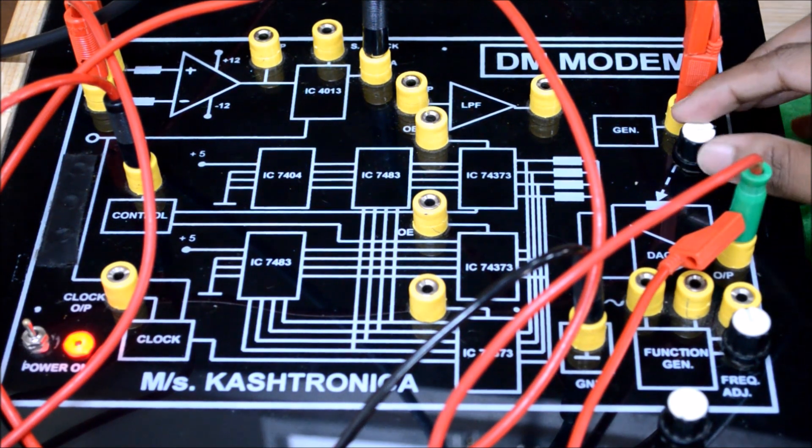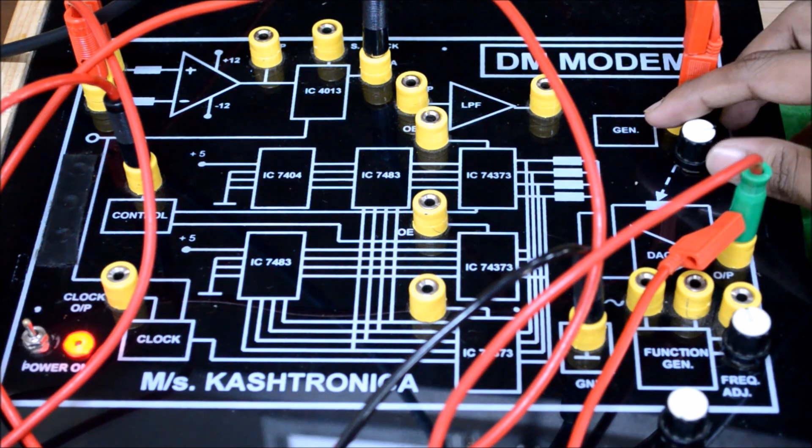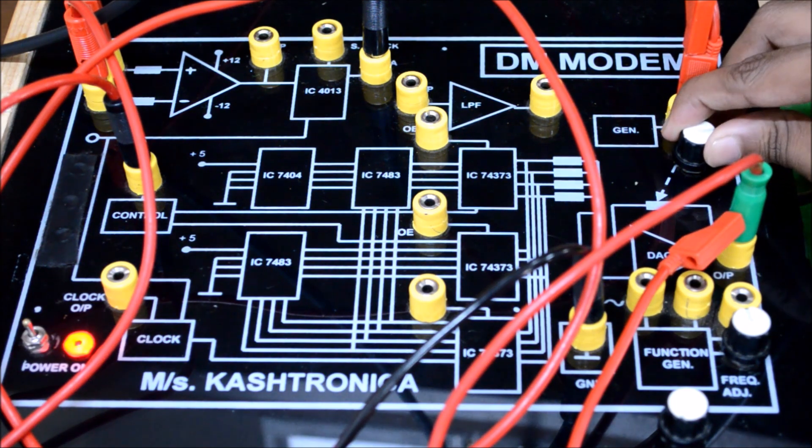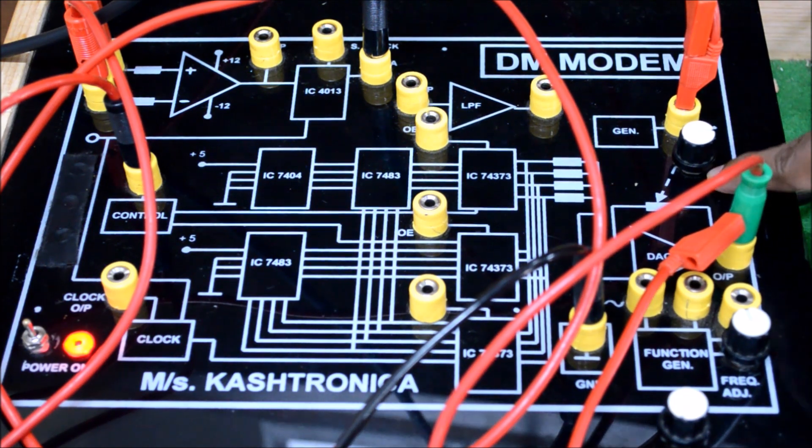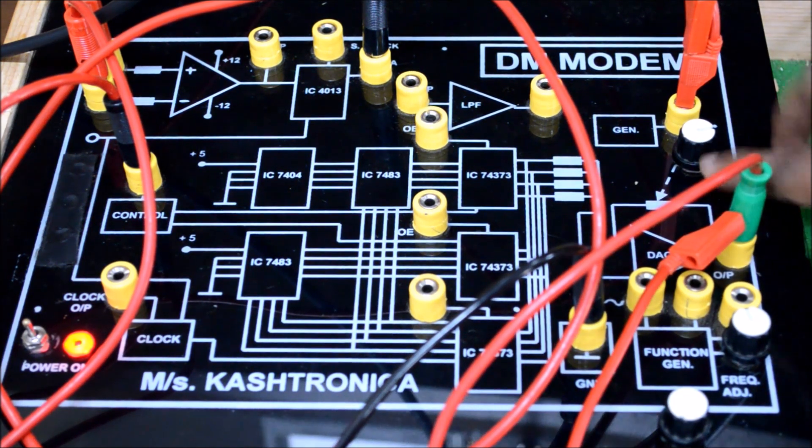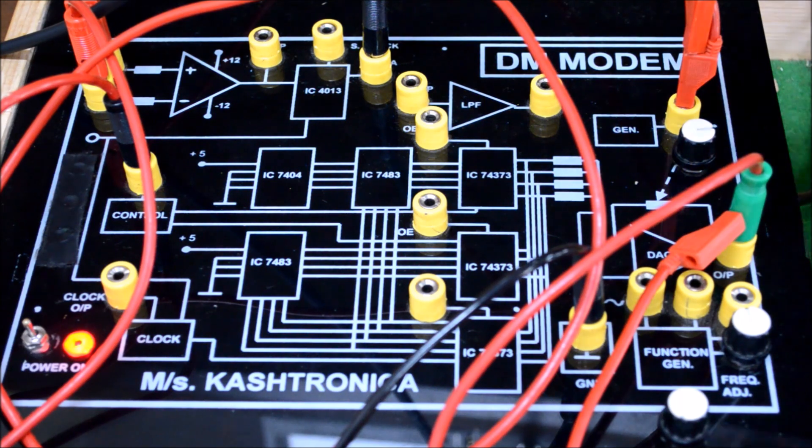On the DM kit, we have a potentiometer to change the step size of the DAC output. At present, the DAC output is at its minimum value, which we noted to be 400mV.